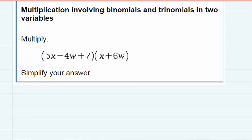Multiplication involving binomials and trinomials in two variables. We're asked to multiply these two expressions. The first one is a trinomial with three terms, and the second one has two terms. To do that, we just need to take it apart and do it one piece at a time.